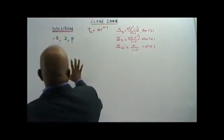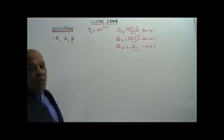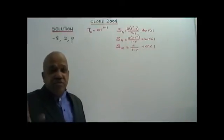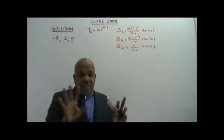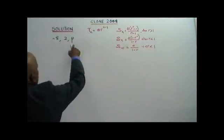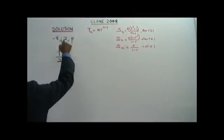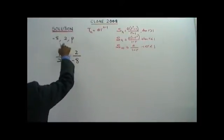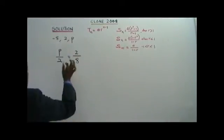All you need to do is apply the technique of getting the common ratio. How do you get the common ratio? The right term divided by the left term. This technique combines three or four terms. So: P over 2 equals 2 over negative 8. Right term divided by left term equals right term divided by left term.